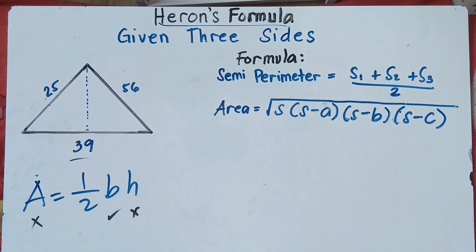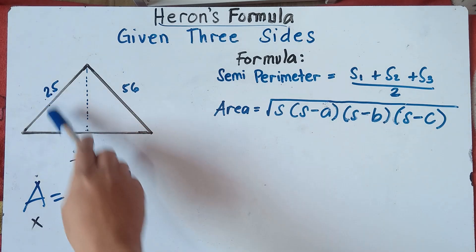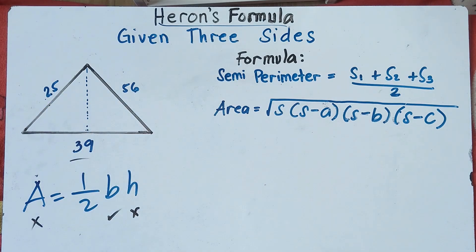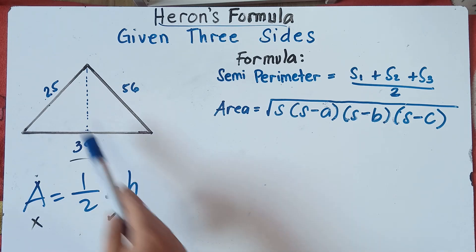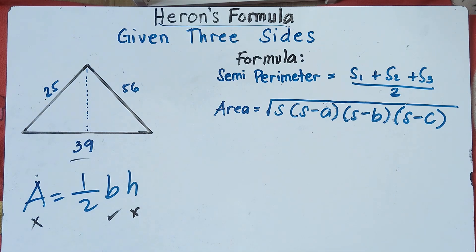It will take time. So the thing that we will do is you need to remember Heron's formula. If three sides are given, we can actually find the area without using the standard formula. Instead, we need to use Heron's formula in finding the area of the triangle.